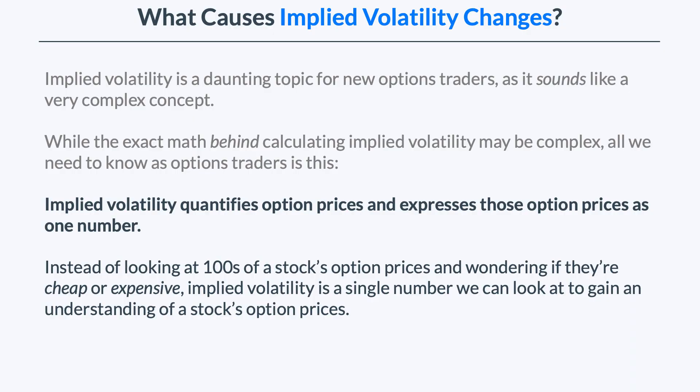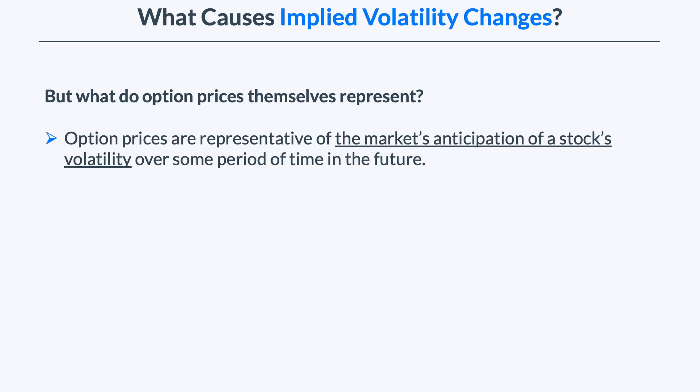Implied volatility quantifies option prices and expresses those option prices as one number. So instead of looking at hundreds of a stock's option prices and wondering if they're cheap or expensive, implied volatility helps us out by representing that stock's option prices as a single number. But what do option prices themselves represent? Option prices are representative of the market's anticipation of a stock's volatility over some period of time in the future.